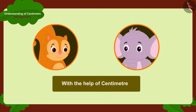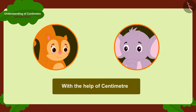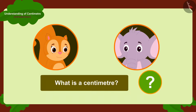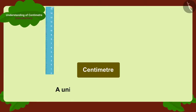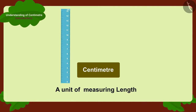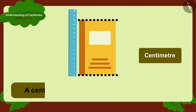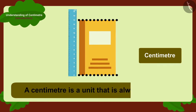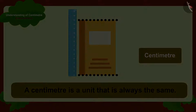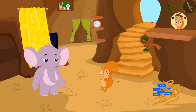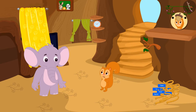Chanda could not understand anything. She immediately asked Appu, what is a centimetre? A centimetre is a unit of measuring length. We can measure the length of any object in centimetres, and a centimetre is a unit that is always the same. Chanda said she understood about centimetres, but asked how she could use it and measure the length of objects.